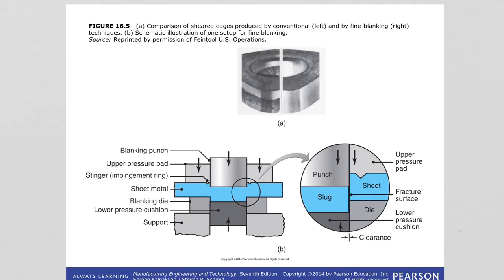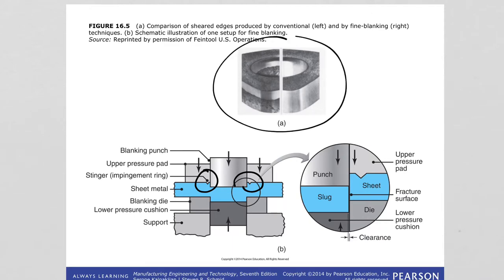Square edges with very smooth sheared surfaces can be produced using fine blanking. What changes is the die design — a V-shape impingement mechanically locks the sheet in place, preventing distortions, and this results in smooth fracture surfaces. You can compare conventional blanking with fine blanking: fine blanking is smooth overall, while in conventional blanking, some parts are smooth and shiny while other parts are rough.